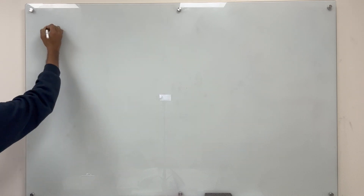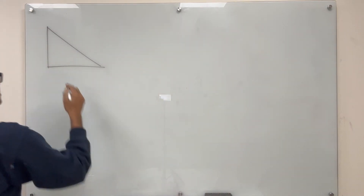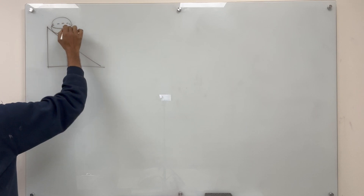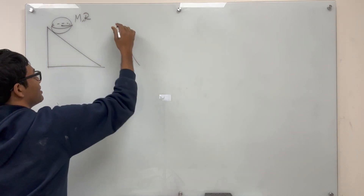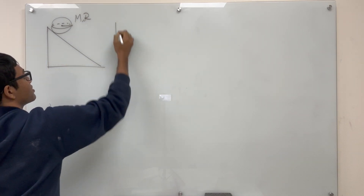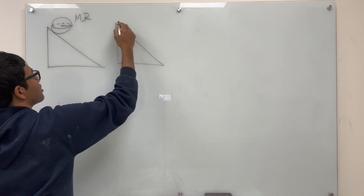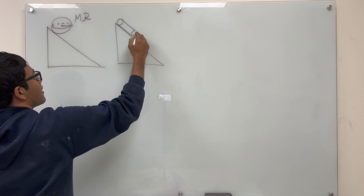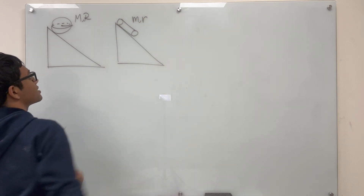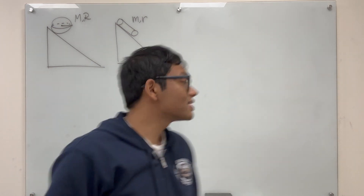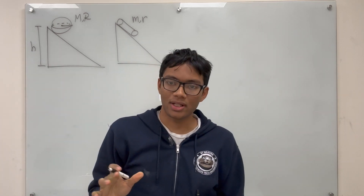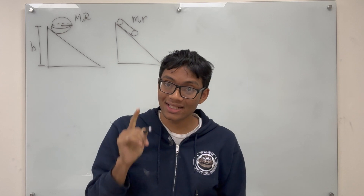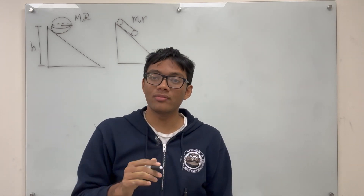Here's the problem. We have an inclined plane, and we have two objects on the inclined plane. We have a sphere with a mass of capital M and a radius of capital R. On the same inclined plane, there is also a cylinder with a mass of lowercase m and a radius of lowercase r. The question is: what is the condition for the cylinder to land on the ground before the sphere?